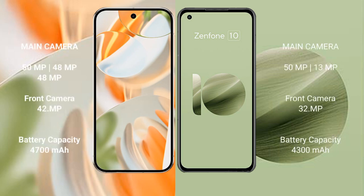Google Pixel 9 Pro features a rear triple camera setup: 50MP plus 48MP plus 48MP, with a 10.5MP front camera. Asus Zenfone 10 has a rear dual camera setup: 50MP plus 13MP, with a 32MP front camera.